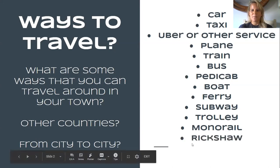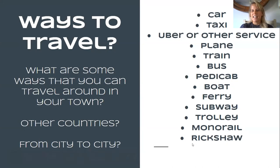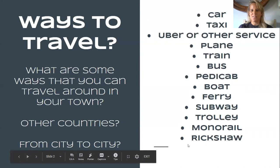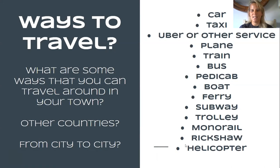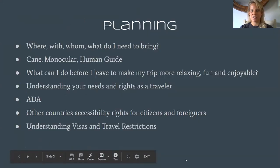A rickshaw is something you might see in other countries like India. It's like a pedicab except the person is usually walking — they have two handles that go behind them and they pull you along. That's a lot of work on the person's back. A helicopter is another option — you usually use those on a short flight, sometimes to get an aerial view of a city. And of course jet planes too.